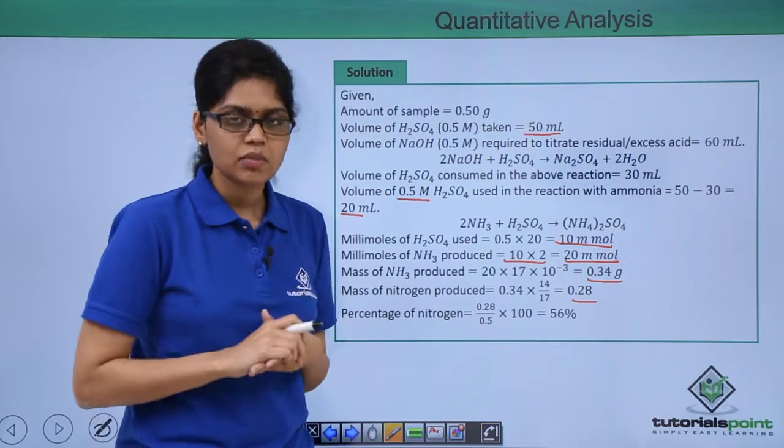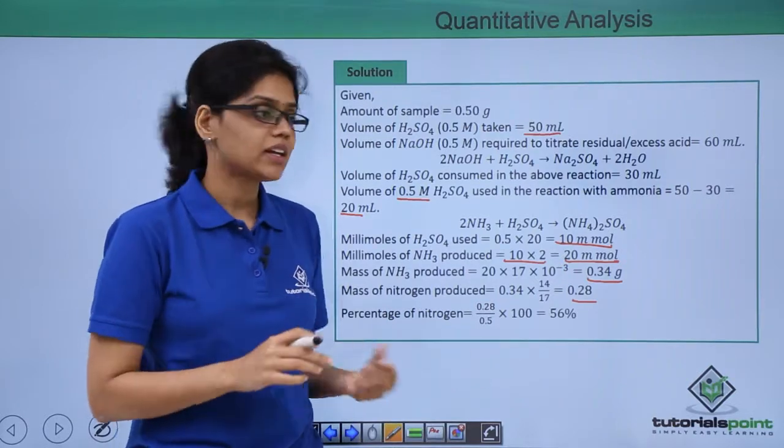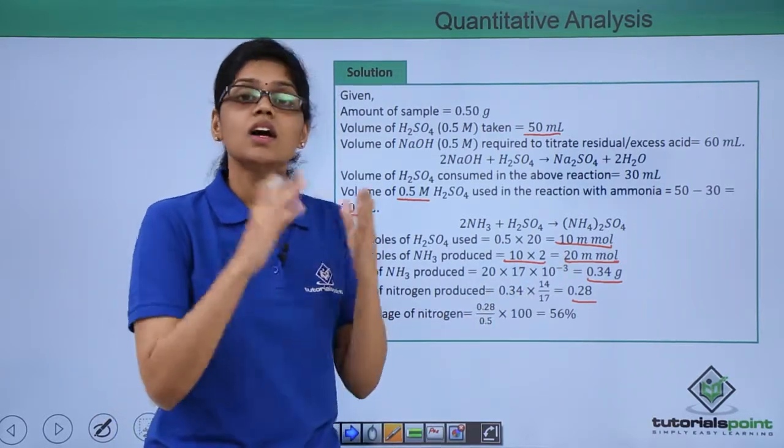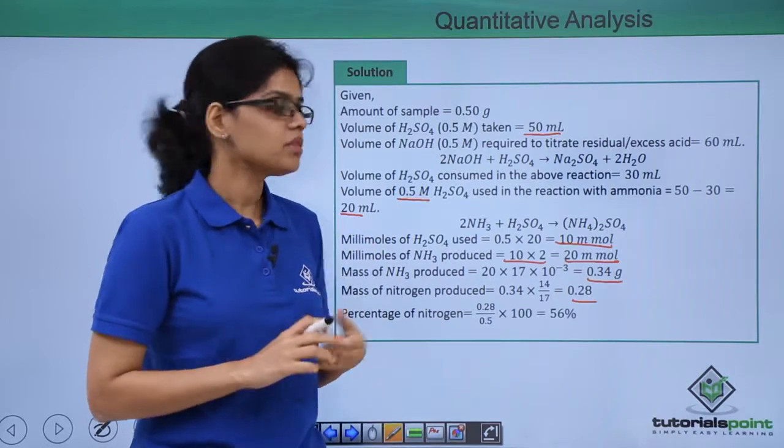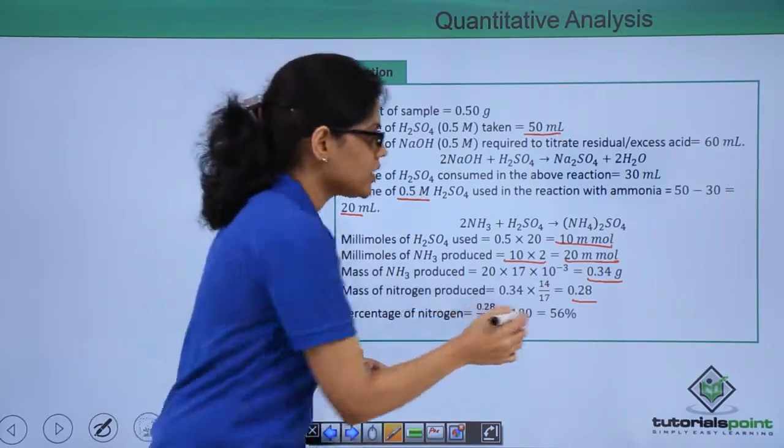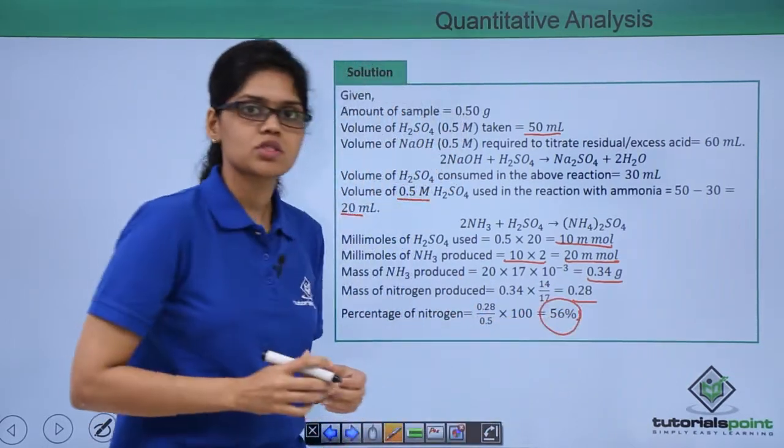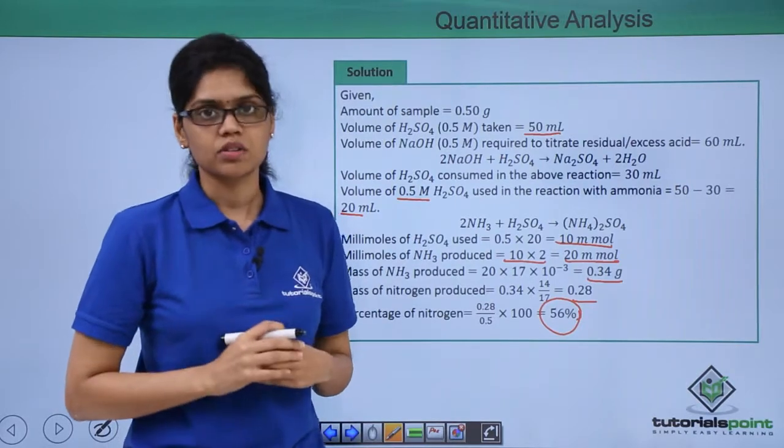The percentage of nitrogen can easily be calculated by simply dividing this particular value by the total mass of organic compound and multiplying it by 100, giving us 56% of nitrogen in this particular organic compound.